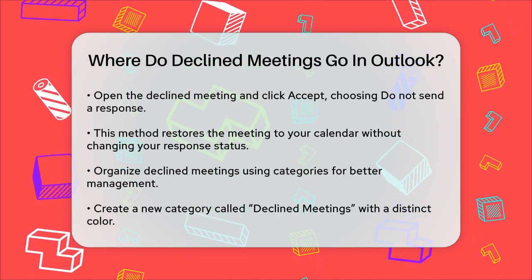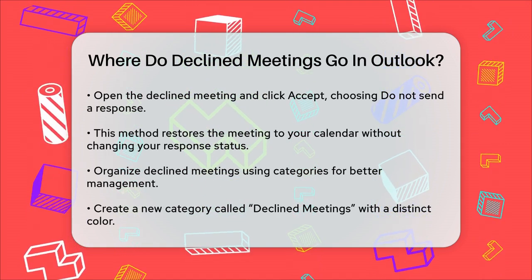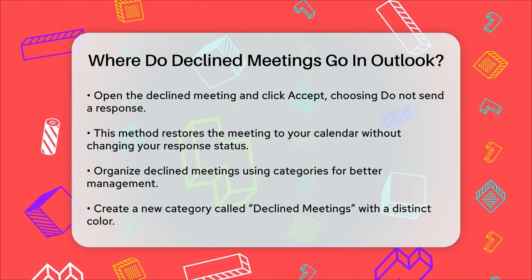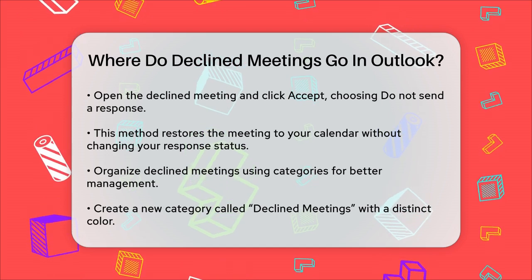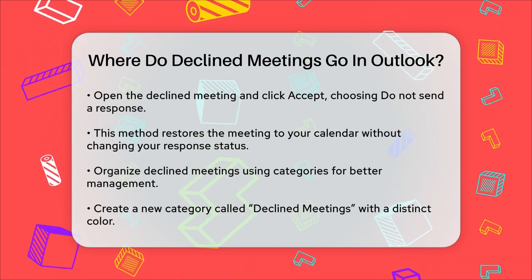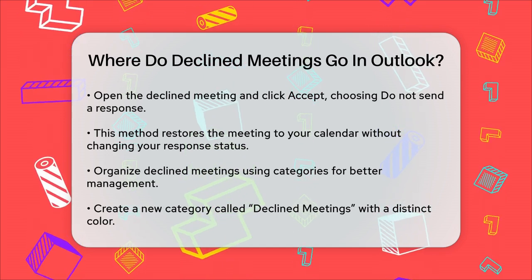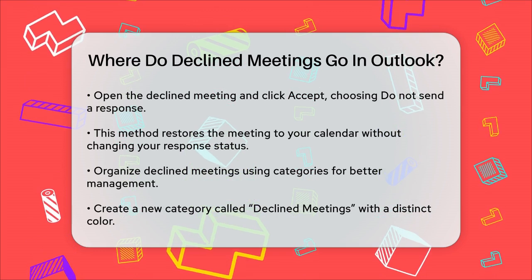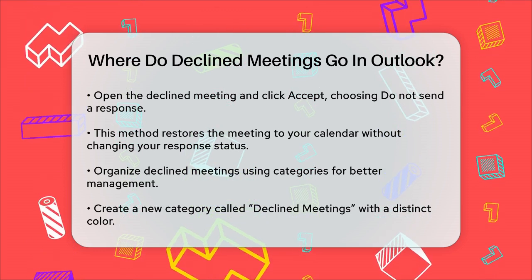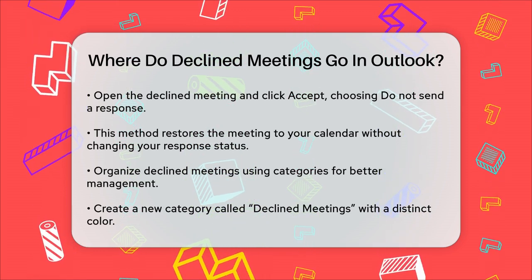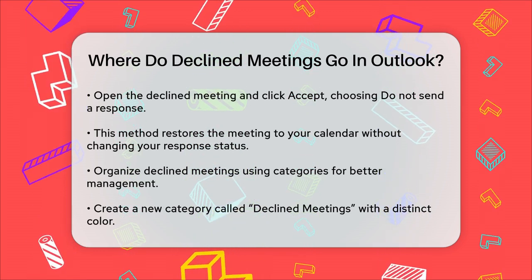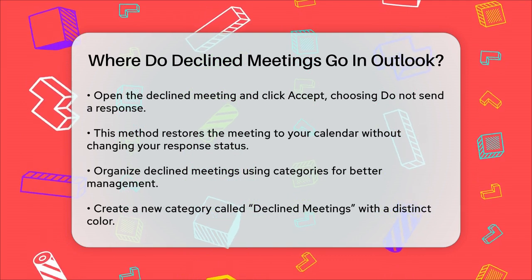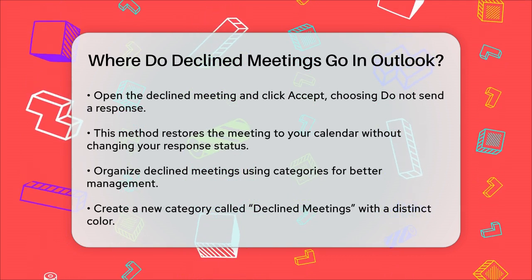So to sum it up, declined meetings in Outlook usually go to the Deleted Items folder, but you can choose to keep them visible on your calendar by adjusting your Outlook settings or using manual methods. This helps you stay informed and manage your time more efficiently.